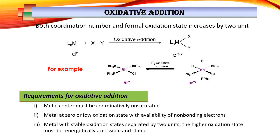Oxidative addition means when a metal complex is exposed to bimolecular — either homonuclear or diatomic molecules or polar molecules — it splits and undergoes oxidative addition, where the individual atoms or species attach as anionic ligands to the metal. The coordination environment of the metal increases by two units and it oxidizes the metal by two units. For example, a rhodium(+1) complex undergoes oxidative addition with hydrogen molecules: the two hydrogen atoms split and attach to the metal as hydrides, so the coordination number and oxidation state both increase by two.